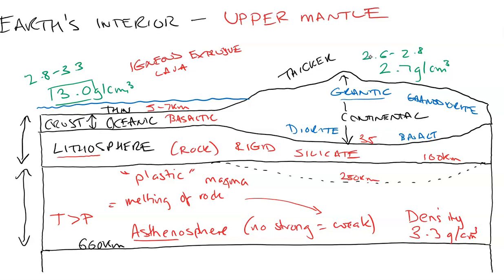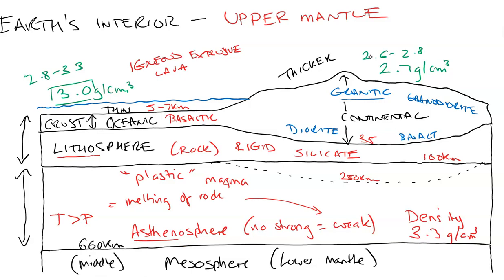Below the asthenosphere is the more solid mesosphere, which is part of the lower mantle discussed in a different video. 'Meso' or 'mezzo' means the middle, and it's the largest area within the mantle. We're really only looking at the top 400 miles of a 4,000-mile radius of the Earth — the top 10% of Earth's interior.